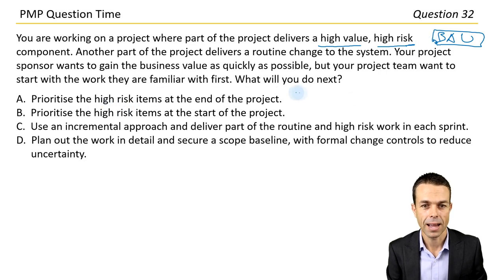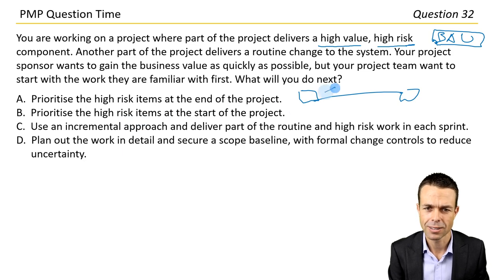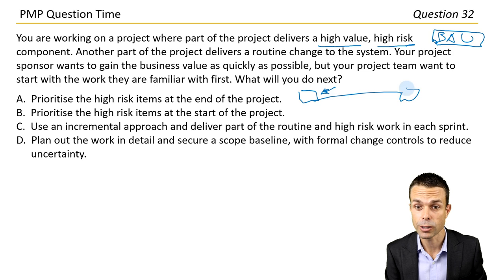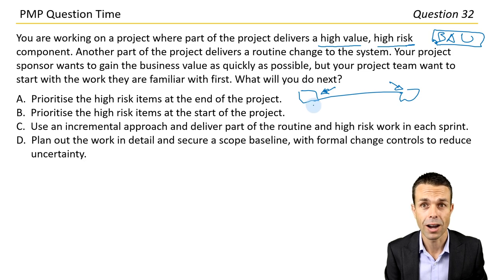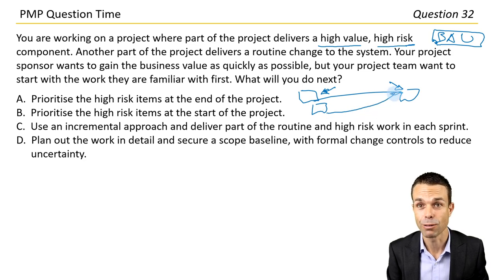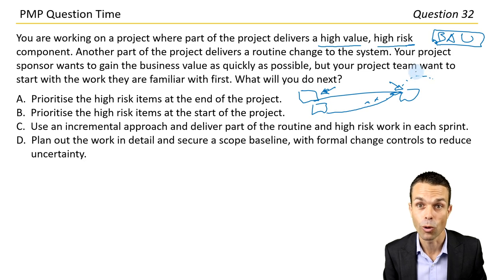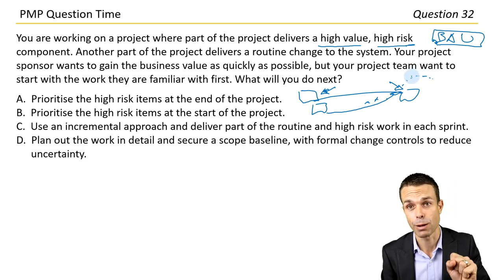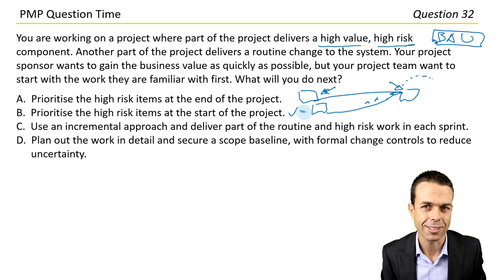Option A: Prioritize the high-risk items at the end of the project. Option B: Prioritize the high-risk items at the start of the project. That actually sounds pretty good — it's a principle we follow: try and remove all the high-risk items first. The risk gets higher towards the end of the project, so if we haven't delivered it, the risk becomes higher and higher — maybe we won't deliver it at all, or it will impact something else right at the end.